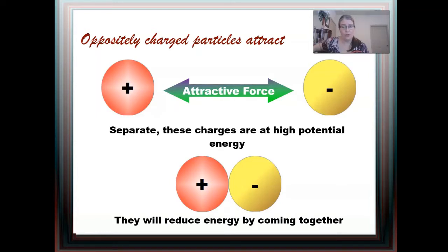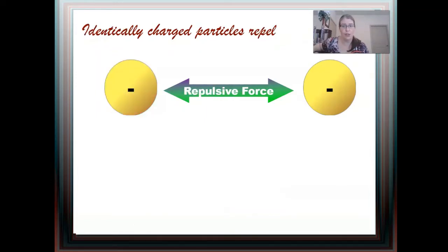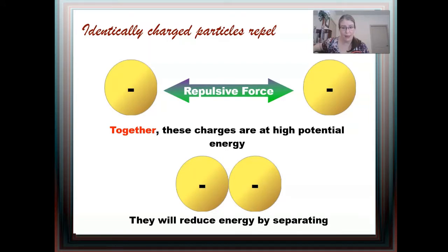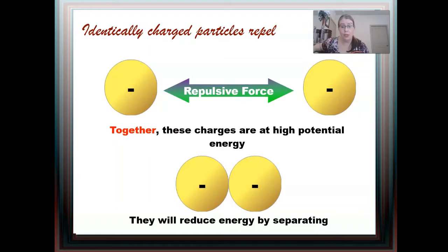But we're not dealing with oppositely charged particles. We're dealing with pairs of electrons, and they're all negatively charged. So in this case, I have identically charged particles with a repulsive force pushing the charges apart. The high energy state is putting these charges together, and the low energy state is reducing the energy by pushing them apart. So molecules have their areas of electrons as far away from each other as possible to reduce electron pair repulsion, making the largest bond angles possible given the number of areas of electrons.